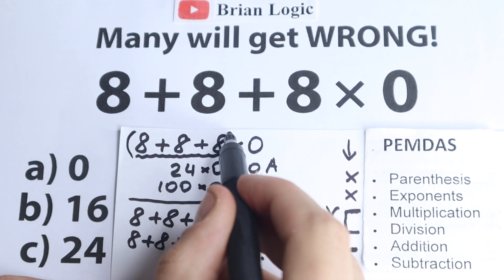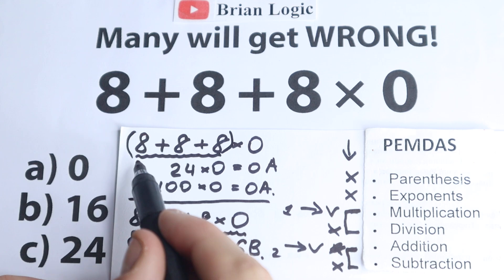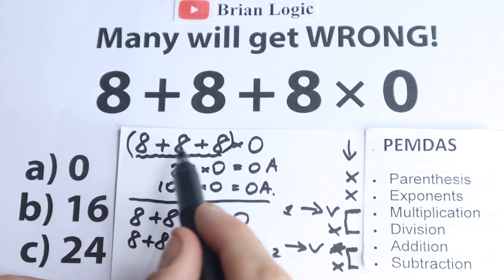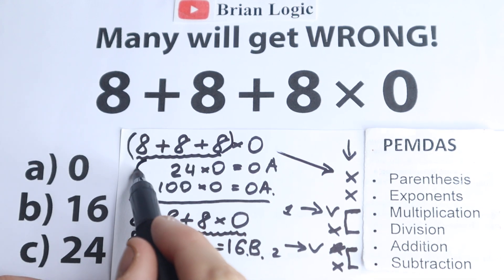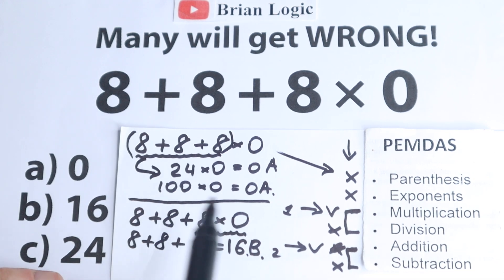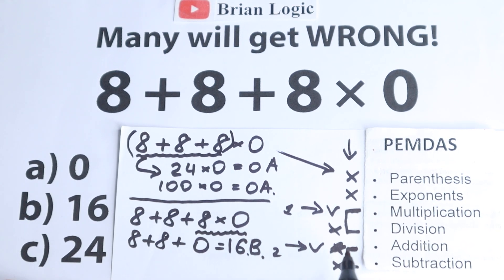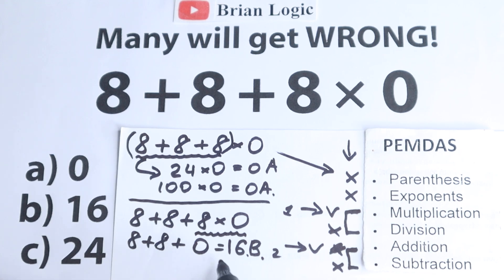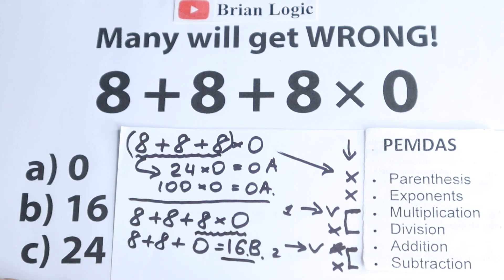But with parentheses, 0 is the correct answer. If you write (8 plus 8 plus 8) as a first step, then 24 times 0 equals 0. So with parentheses the correct answer is 0, but in our case we don't have any parentheses — so the correct answer is 16. Learn this rule: multiplication comes before addition. This is a very important rule.